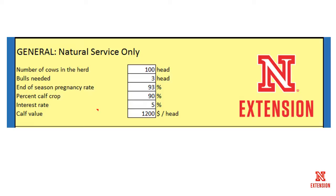There's also an opportunity to enter calf value. This calf value is important in that we're going to compare natural service percent calf crop weaned per cow exposed to an AI service and cleanup bull percent calf crop weaned per cow exposed. If we expect a difference between those two methods, then a difference in percent calf crop weaned — at $1,200 per calf — comes into play and is used to compare those two options and calculate any benefit we might expect for a better pregnancy rate utilizing one of these two methods.